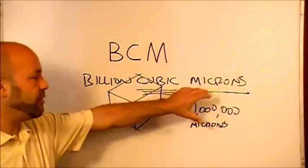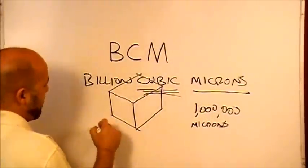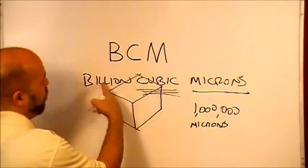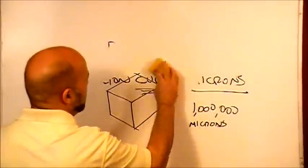It's a unit of length. So if we have a BCM, we have 1 billion cubic microns. We can look at it like this.